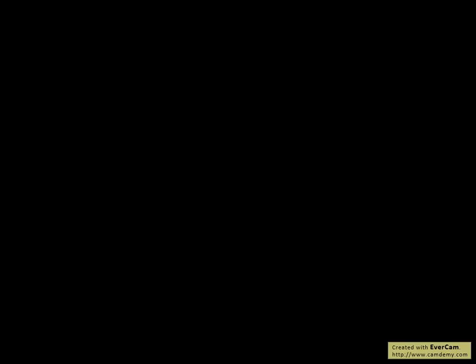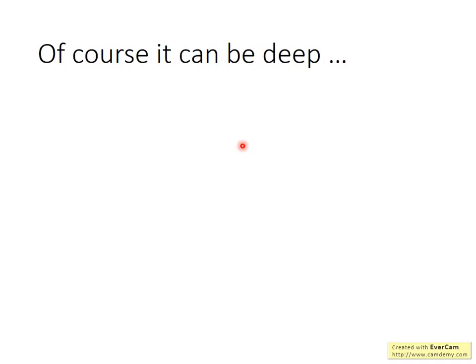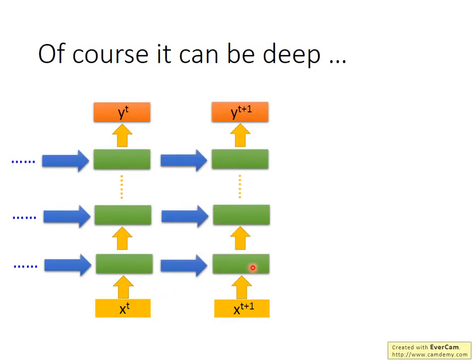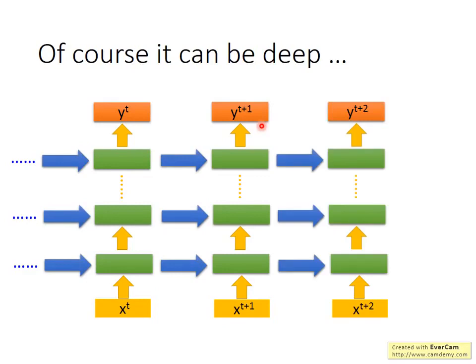This is the basic concept of the recurrent neural network. You can also design a deep RNN architecture. We just saw one with only one hidden layer, but it can surely be a deep recurrent neural network. After inputting X1, it passes through one hidden layer, then a second, then many hidden layers, and finally produces the output. All outputs of each hidden layer are stored in memory, and at the next time step, every hidden layer reads those stored values.